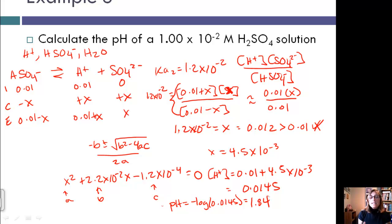So as you can see, in this case, the second step of the dissociation actually contributed almost half of the concentration, whereas in example two when we had a high concentration of the strong acid, that second dissociation step didn't really have an effect.